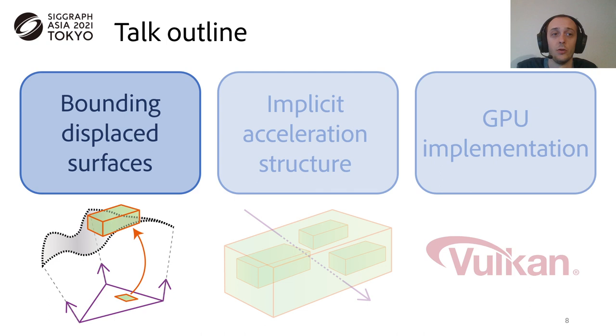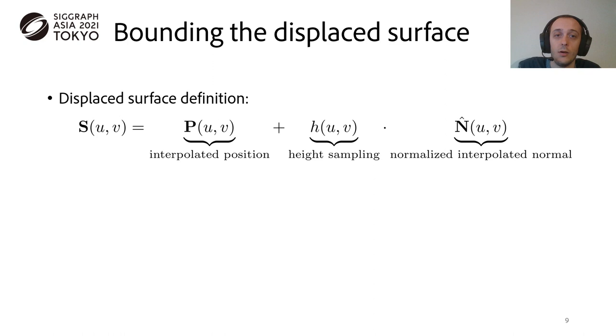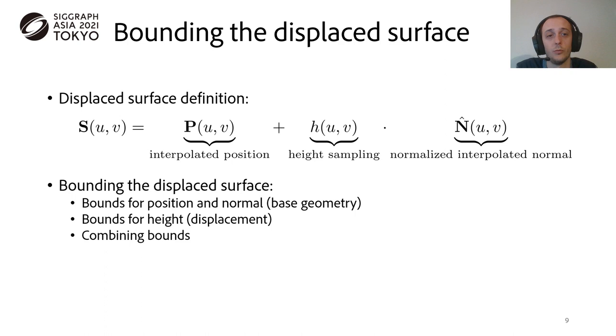So, let's see first how to effectively compute bounds of the displaced surface. And let's start by defining what is the displaced surface. For any given texture coordinate, the displaced point is obtained by combining positions on the base surface, offsetted by the value of the height sampling along the base normal. From this formula, we can see that computing bounds for the displacement means that, on one hand, we need to bound the base position and normal, which purely depends on the base geometry. On the other hand, we need to bound the height values, which purely depends on the displacement maps. And finally, we need a meaningful approach to combine both bounds.